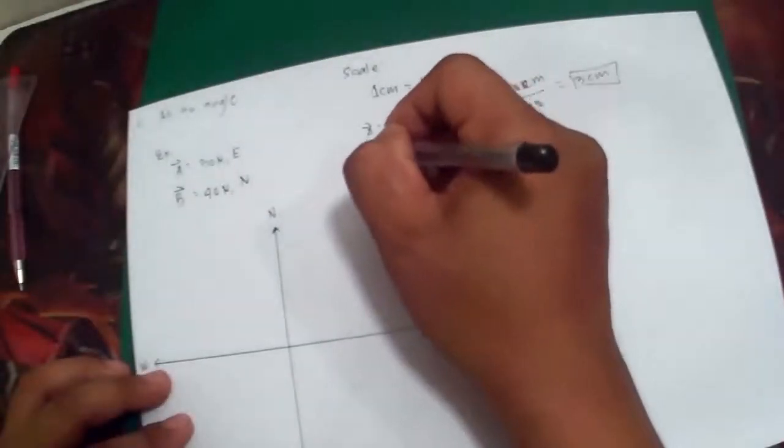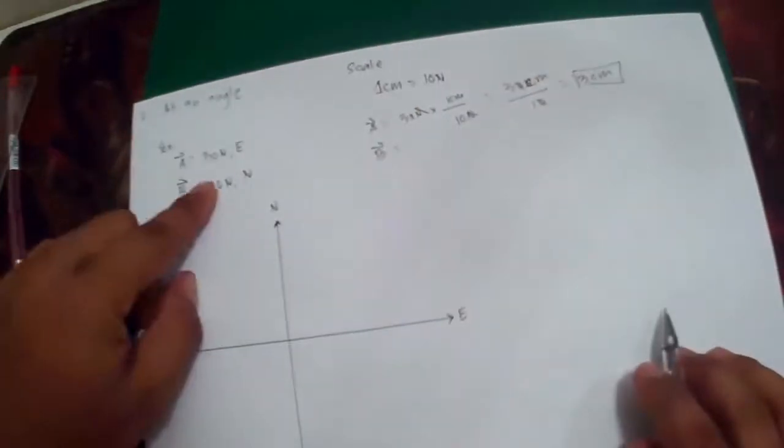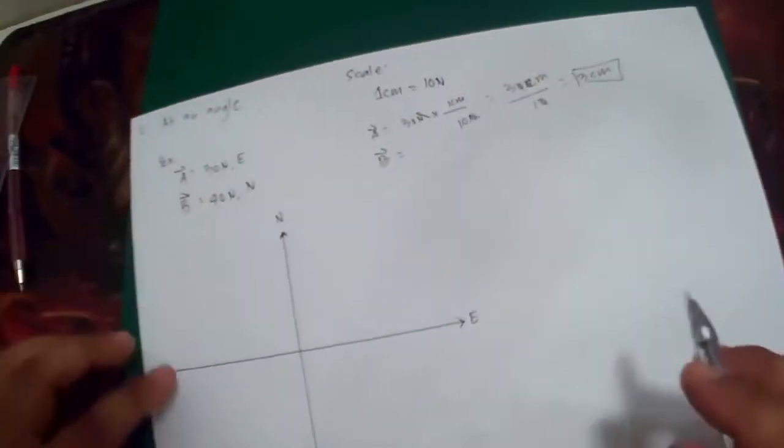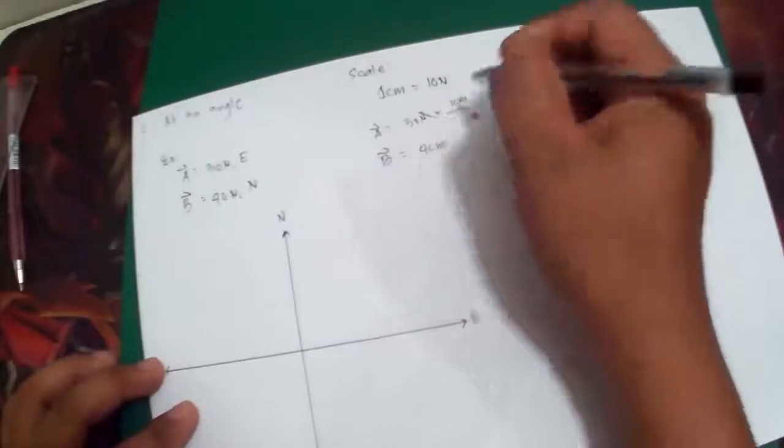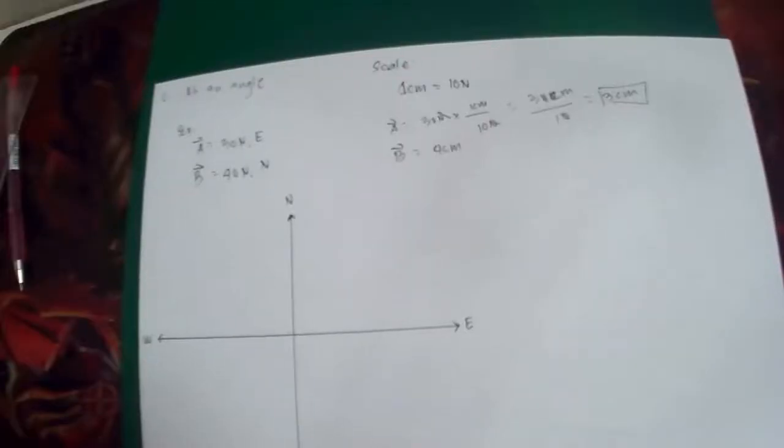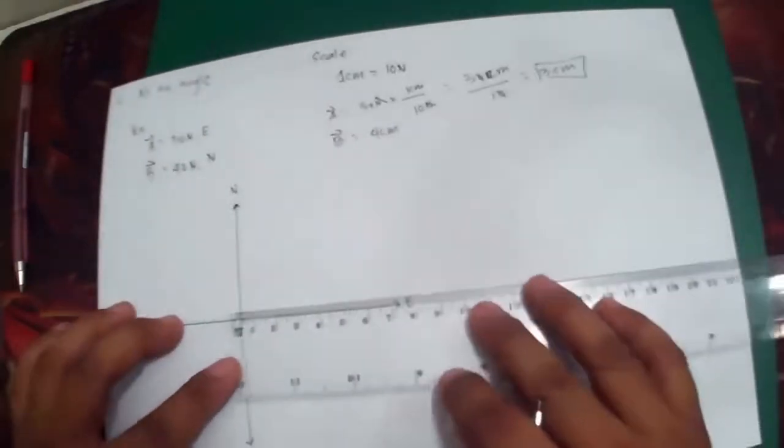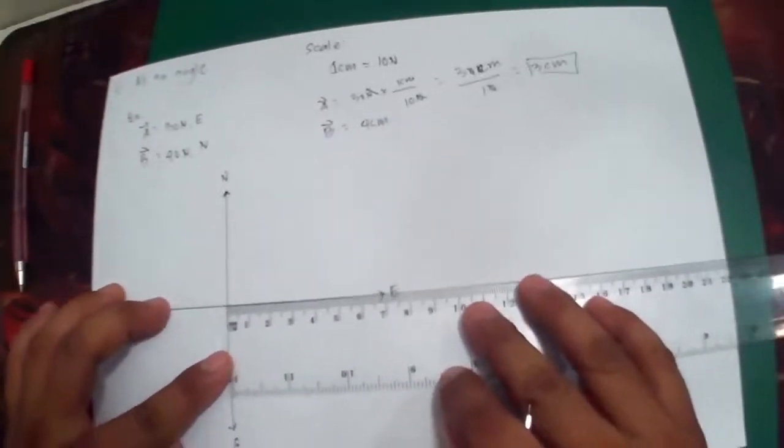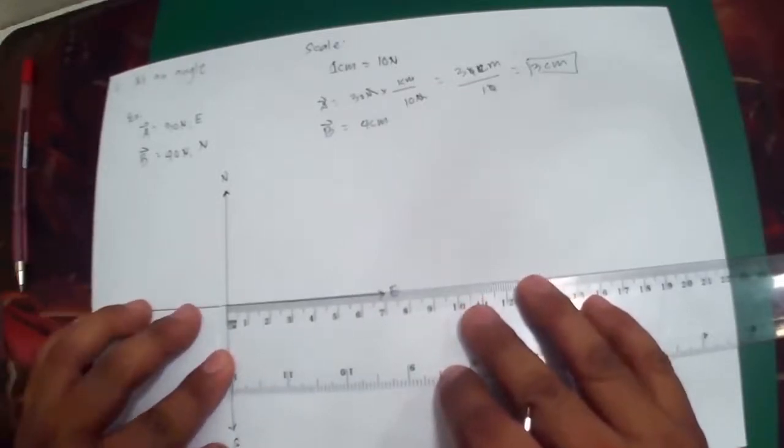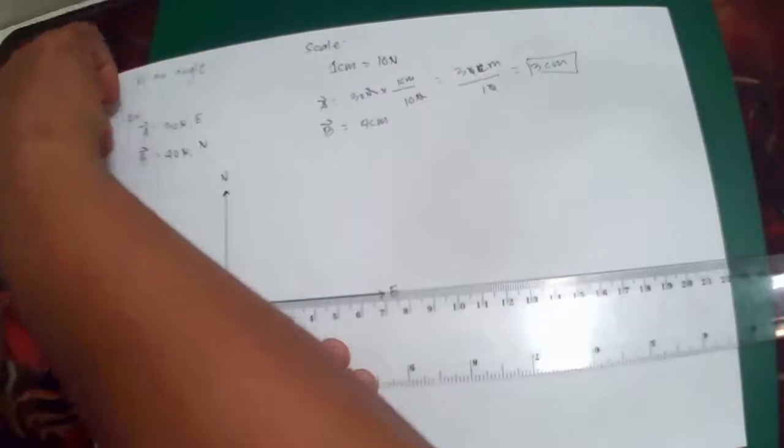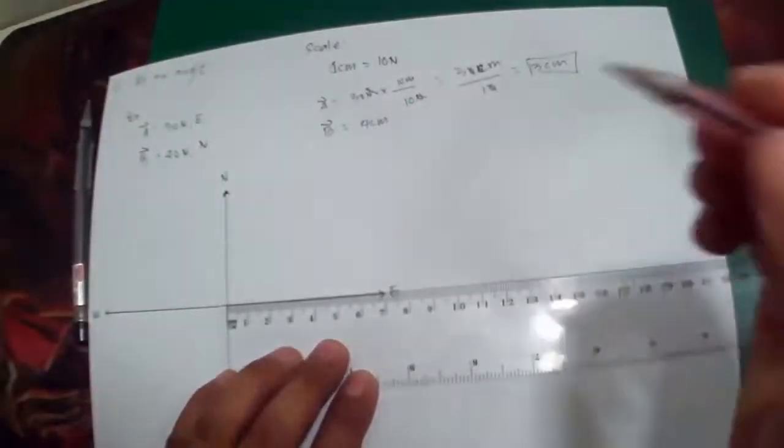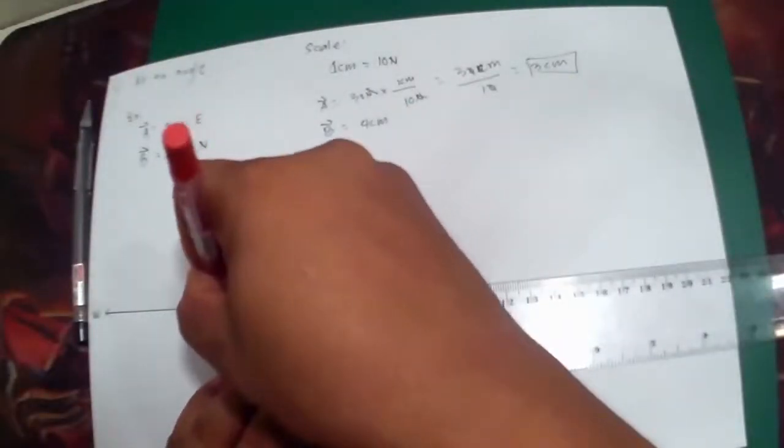And do the rest for vector B. This is 4 centimeters. So let's try to graph our vector, vector A. Vector A is here. That's 3 centimeters, so from here, that's 3.